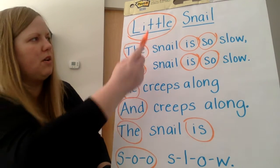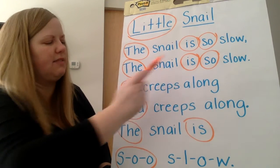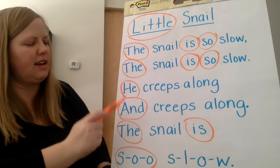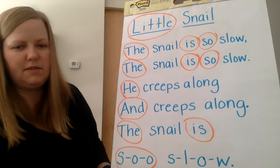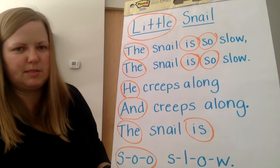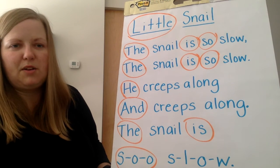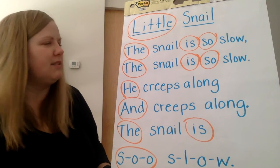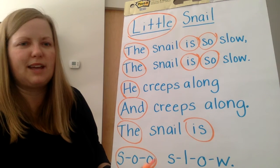So we have 1, 2, 3, 4, 5, 6, 7, 8, 9, 10, 11, 12 sight words in this poem. Before we go, let's read it together one more time.